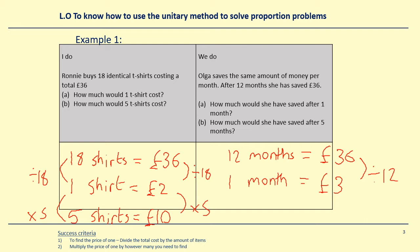So in one month she saves £3. How much money would she have saved after five months? Well in one month she saved £3, so in five months — five times the time — she would have saved five times the money. So £3 × 5 gives me £15. Well done if you got that right — really well done. We'll go on to the next example now.